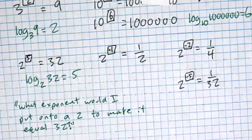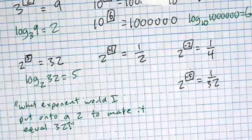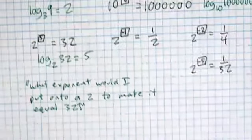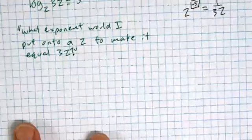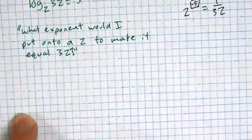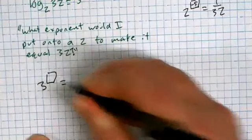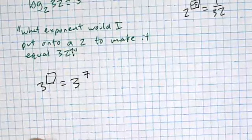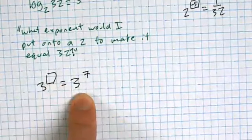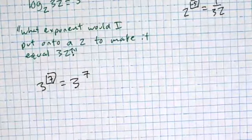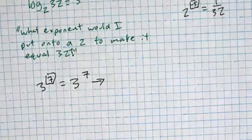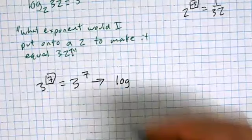We're not going to get into all the really big weird properties of exponents today, but I want to talk about a couple that are useful for your homework. Here's a good one — you're going to think I'm trying to trick you because it seems too easy: what exponent could I put onto a three to make it equal to three to the seven? The answer is seven. Yes, it is.